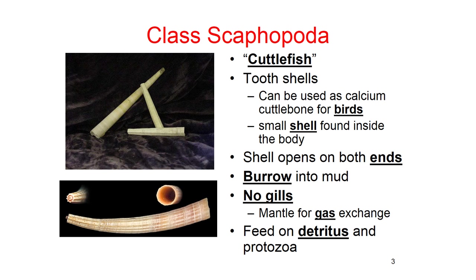The first class is scaphopoda. These are the cuttlefish. Their name means tooth shell, and they can be used as calcium cuttlebone for birds. So if you have a parakeet and you give them cuttlebone, this is the organism it comes from. They have a small shell found on the inside of their body. The shell is open on both ends. They like to burrow in the mud, and they do not have gills — they just use their mantle for gas exchange through diffusion.